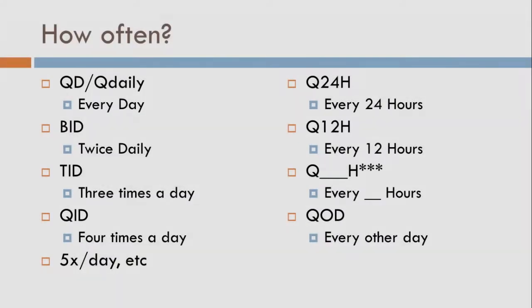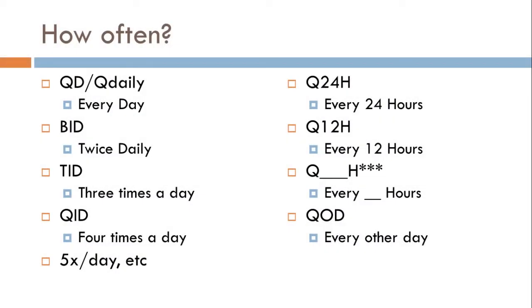Let's look at sig codes for how often to take medications. QD or 'q daily' means once daily — 'q daily' is preferred because QD can look like QOD. BID — think bicycle — means twice daily. TID — think tricycle — means three times a day. QID — think 'quad,' meaning four — is four times a day. Past that, prescribers typically write 'five times a day,' 'six times a day,' and so on.